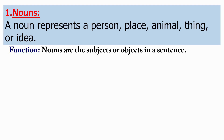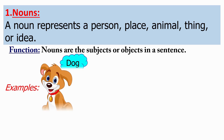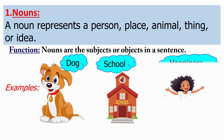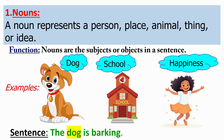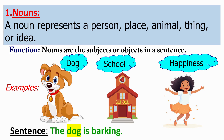Now let's check what is a noun. A noun represents a person, place, animal, thing, or idea. Nouns are the subjects or objects in a sentence. For examples: dog, school, happiness, etc. Let's check in a sentence now: "The dog is barking." In this sentence, the word dog is a noun, as it is the name of an animal.